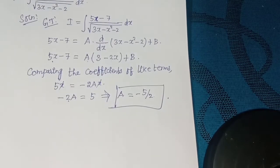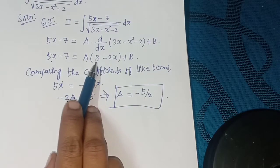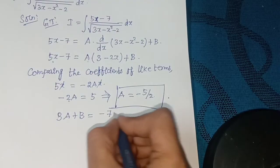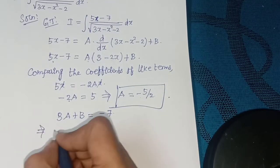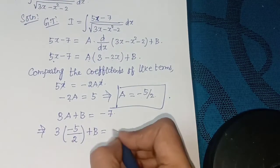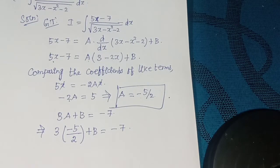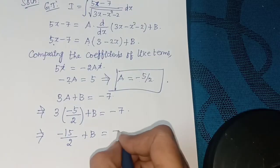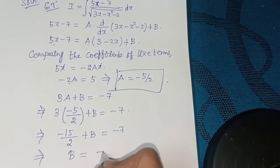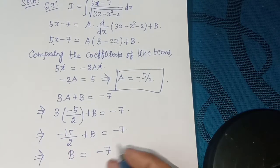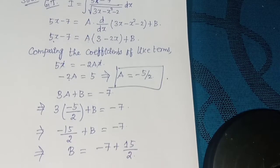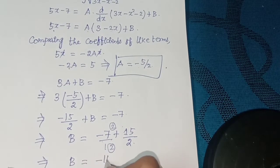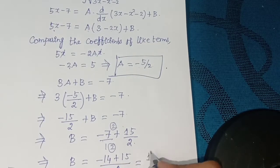With a = -5/2. Now using the constant term: 3a + b = -7. Substituting a = -5/2: 3(-5/2) + b = -7, so b = -7 + 15/2. Taking LCM: b = (-14 + 15)/2 = 1/2.